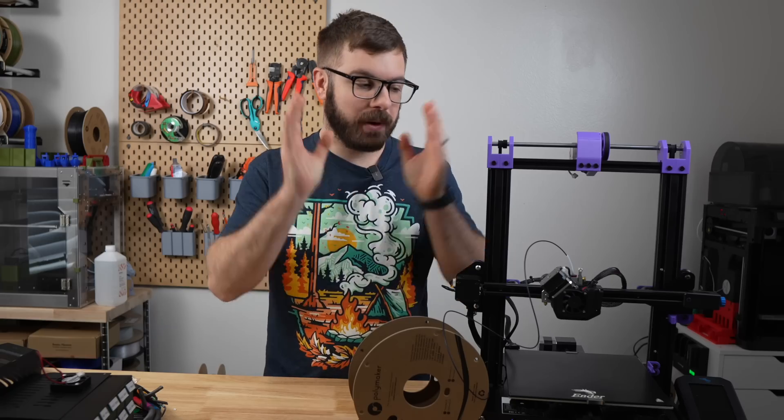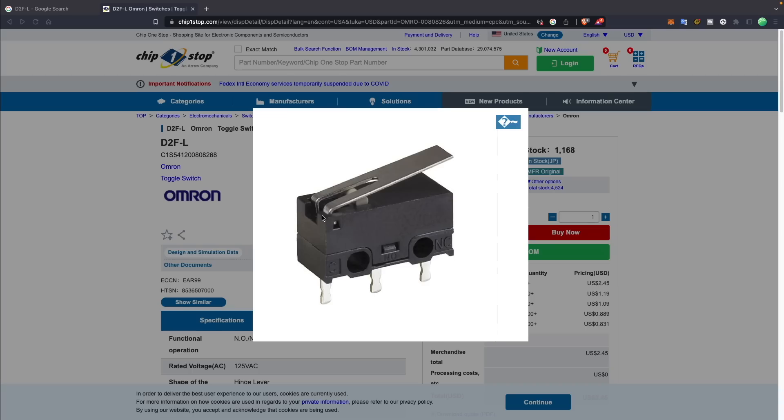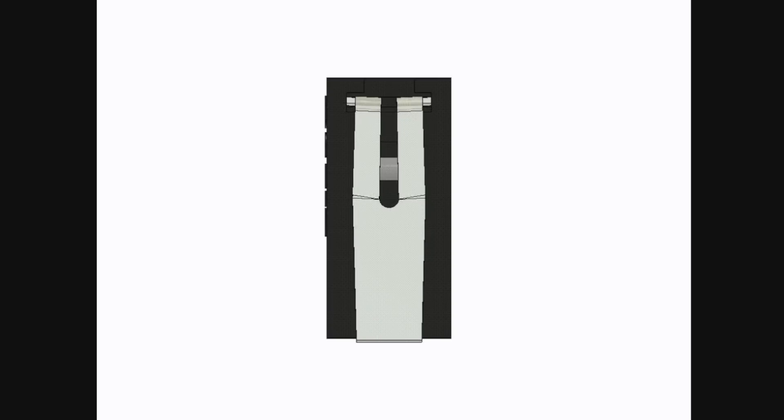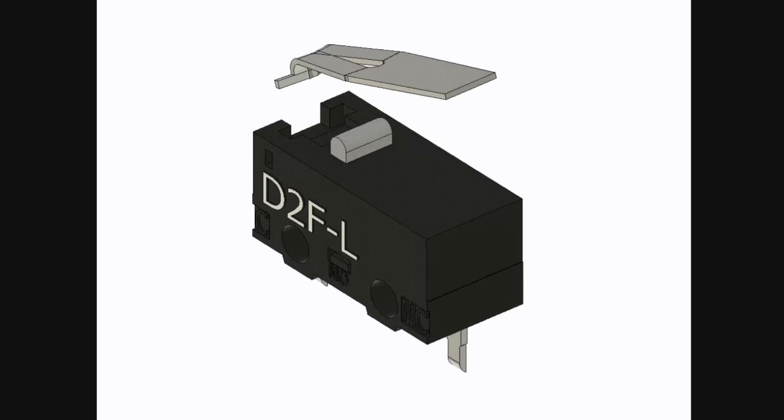Now that you've got all of your parts printed out, we are ready to get into the assembly. Starting with the probe block, depending on which version of the micro switch you sourced, you may need to remove the lever. To avoid damaging the switch, use tweezers to squeeze the legs and make the removal process easier.